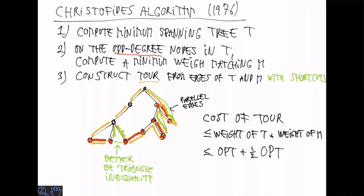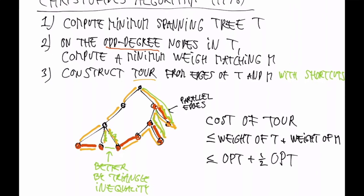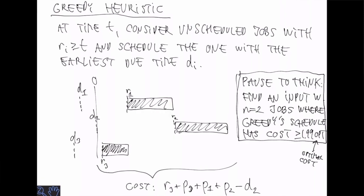In the course we try to do the impossible without failing totally by relaxing the requirements on the output of our algorithms. Let me mention the main areas we consider.